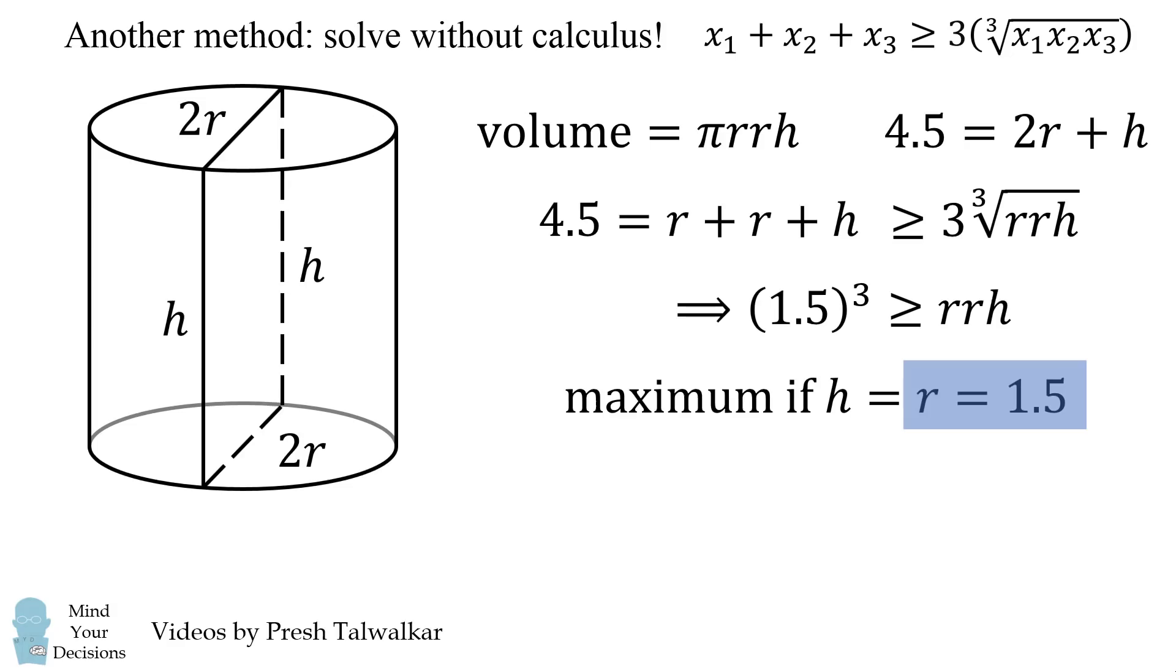What's more is we've also figured out the value of h, and we know the maximum volume will be 1.5³ times π. So, the AM-GM method is a little bit more complicated, but it produces some very satisfying results that you can solve for all of the variables and the maximum volume pretty quickly.